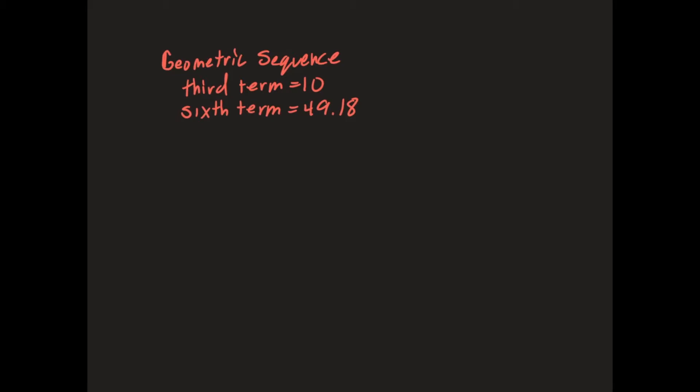This is for a geometric sequence where you have two of the terms, for example the third term and the sixth term, and you're asked to figure out what R is, because you can't just simply divide the two, because there's several steps in between.